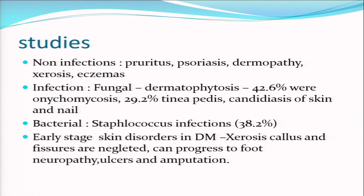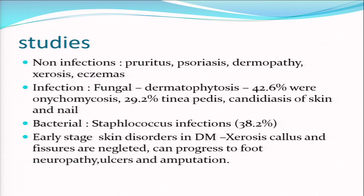Non-infectious conditions are very common. As my professor used to say, any generalized unexplained pruritus in middle age past 50 - look for diabetes. Psoriasis, dermopathy, and xerosis are very early signs in diabetes. For infections, dermatophytosis hits the list at 42.6 percent, and the most common is onychomycosis, which is very refractory and difficult to treat - these patients may require six months to one year of treatment.